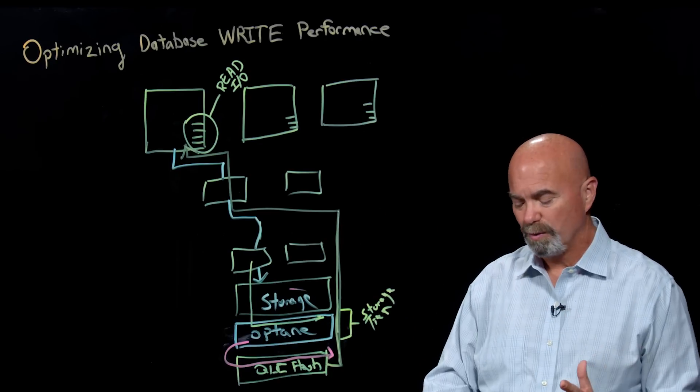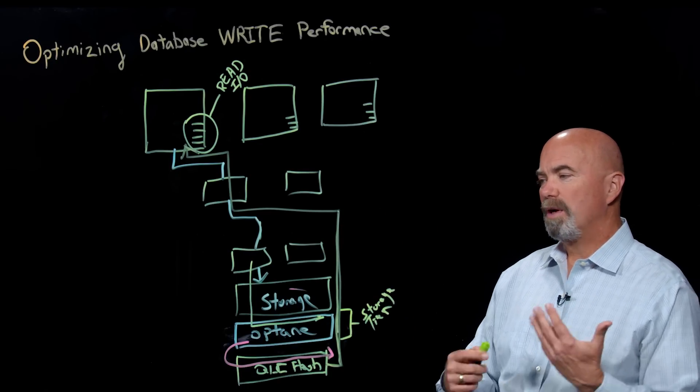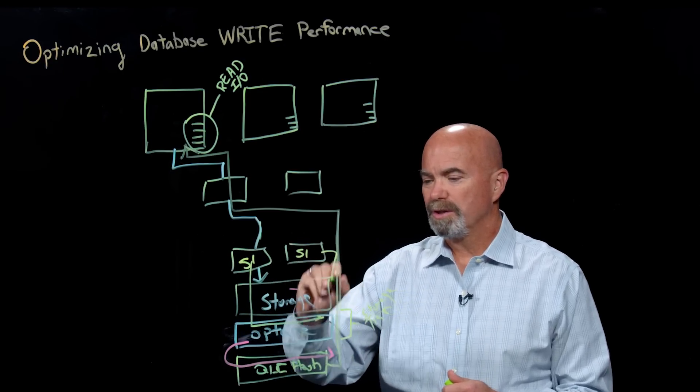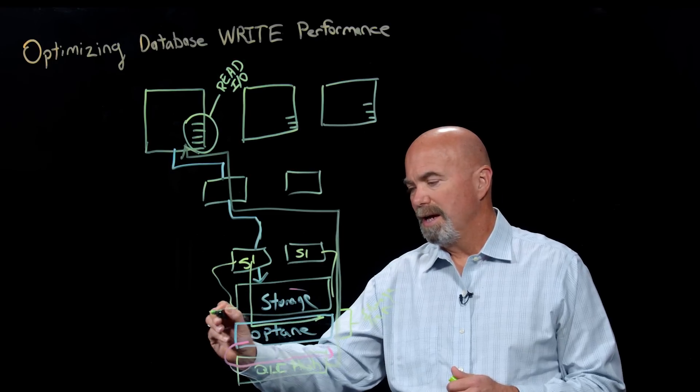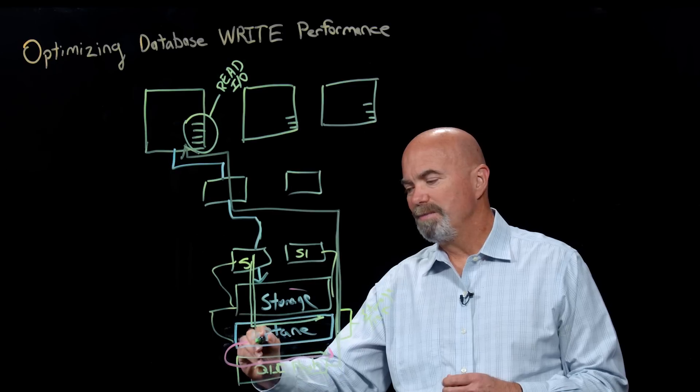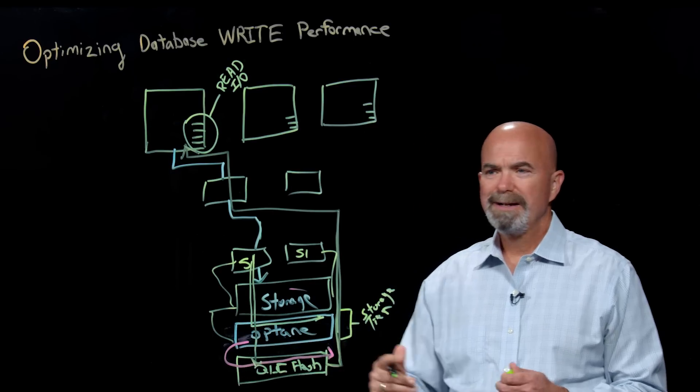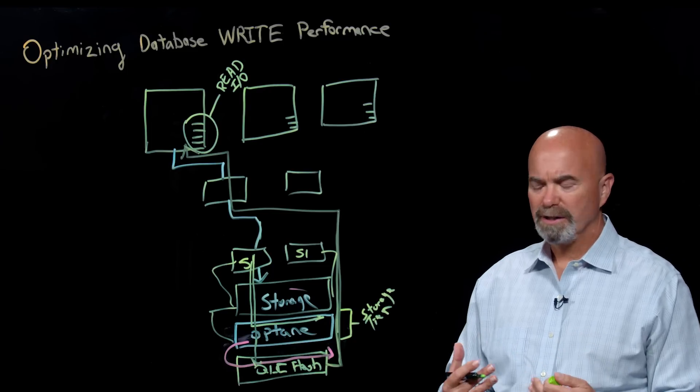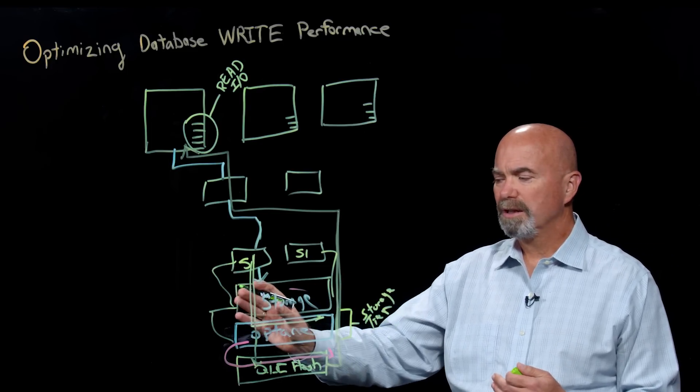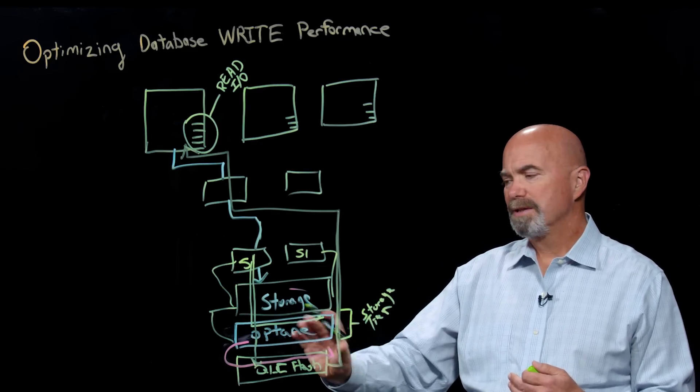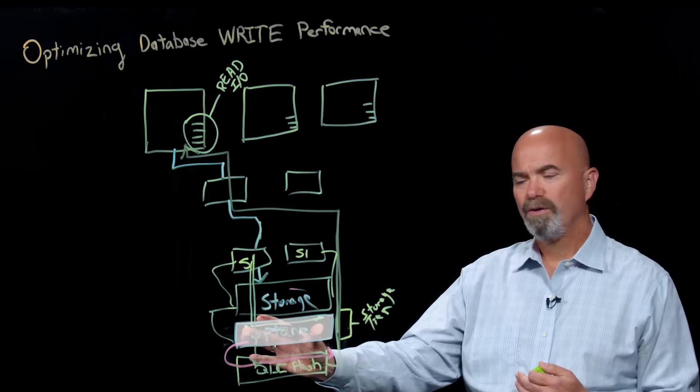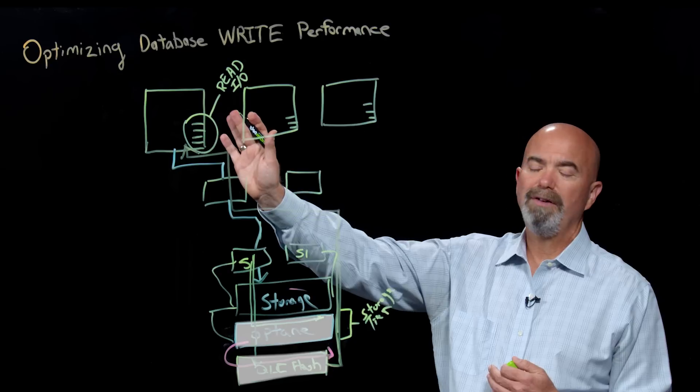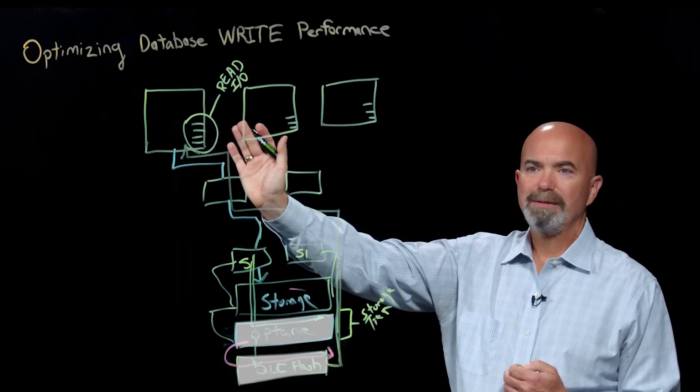So that really helps solve the read performance thing. And so what we've done at StoreOne is our software runs on the storage controllers that connect to all this. And it manages the movement of data through these different tiers. And also we've rewritten the storage engine to be very efficient. So we get incredibly good read and write performance. And so we don't slow Optane down. We take full advantage of it. And then we can also take full advantage of the QLC tier and move data very quickly to these database engines.